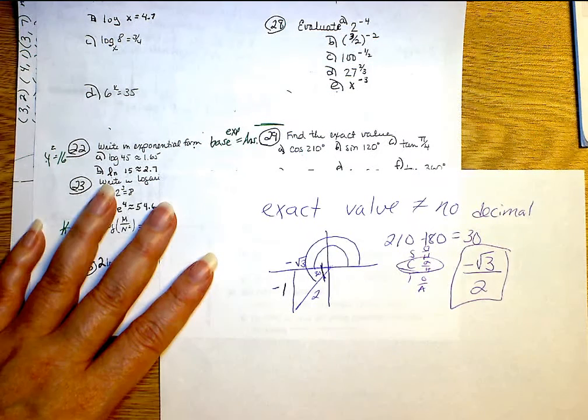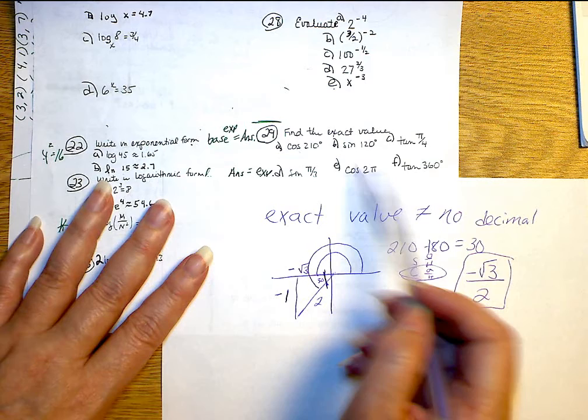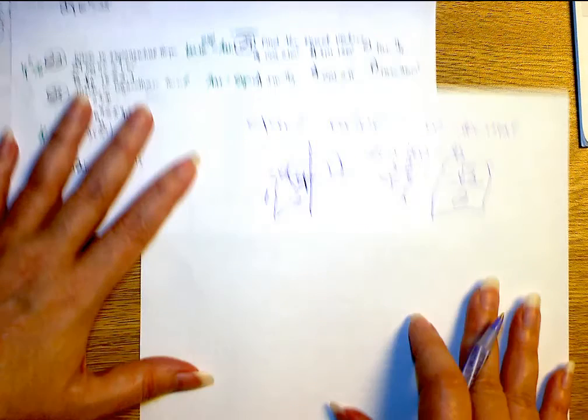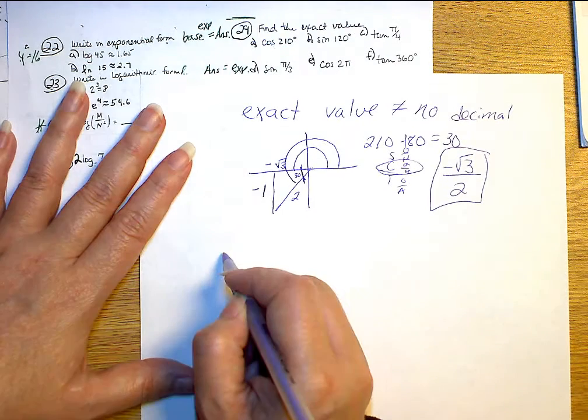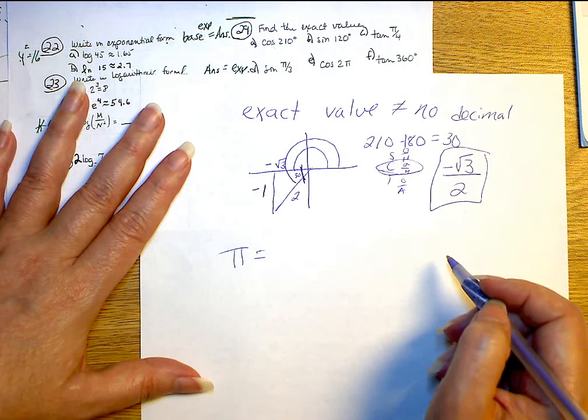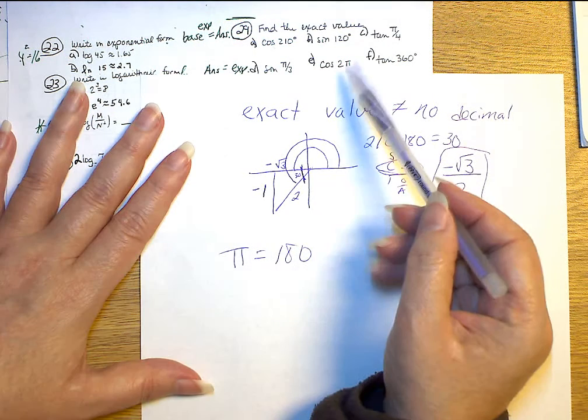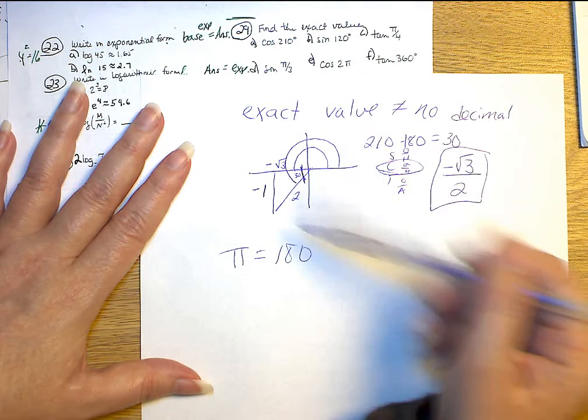When you are doing A through F, that's what you have to do. Two things you have to remember. First thing is that pi equals how many degrees? 180. So I would convert these to degrees and then do your triangles.